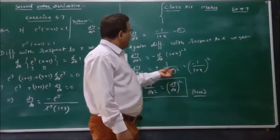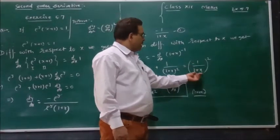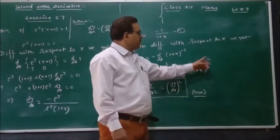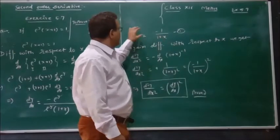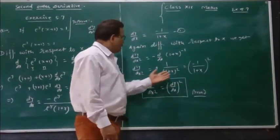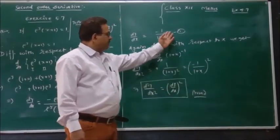And we can write this as minus 1 divided by the value, which is equal to dy divided by dx whole squared. So we have d²y/dx² equals (dy/dx)², hence proved.